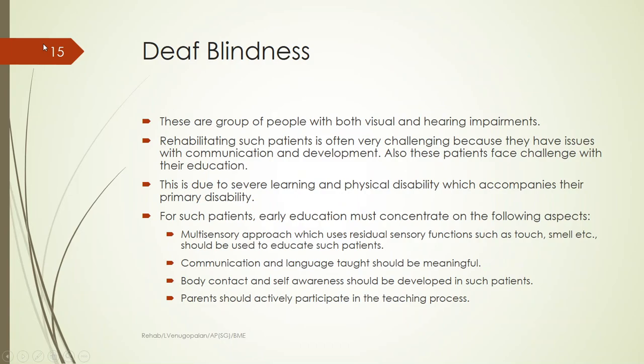Another concept is deaf-blindness. Deaf-blind people are those who have both visual and hearing impairment. Rehabilitation of such patients is very difficult because they have issues with both communication and development. The person can neither see nor hear, which is a very tricky situation. As a rehabilitation therapist, it is very hard to figure out whether the patient has understood what is being said.